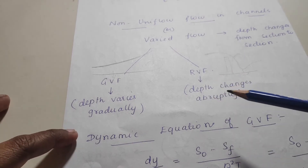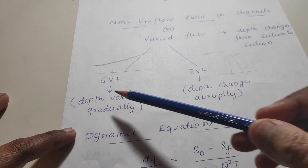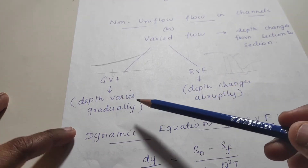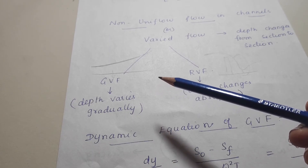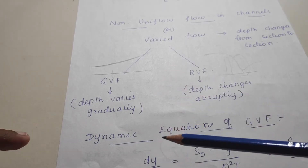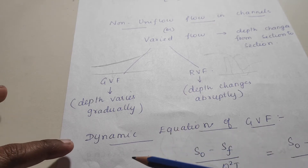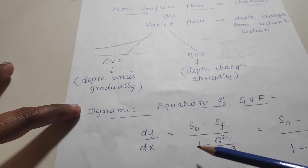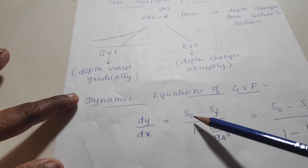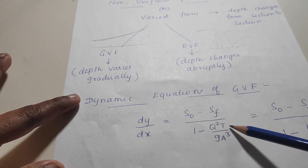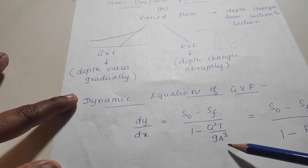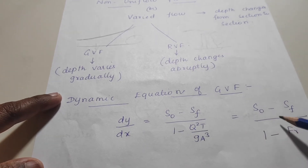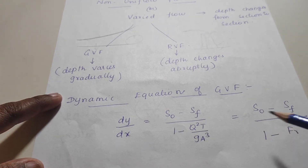For gradually varied flow, the rate of change of depth is found using the dynamic equation: dy/dx = (S0 − Sf) / (1 − q²T / gA³), or equivalently, dy/dx = (S0 − Sf) / (1 − Fr²), where Fr is the Froude number.